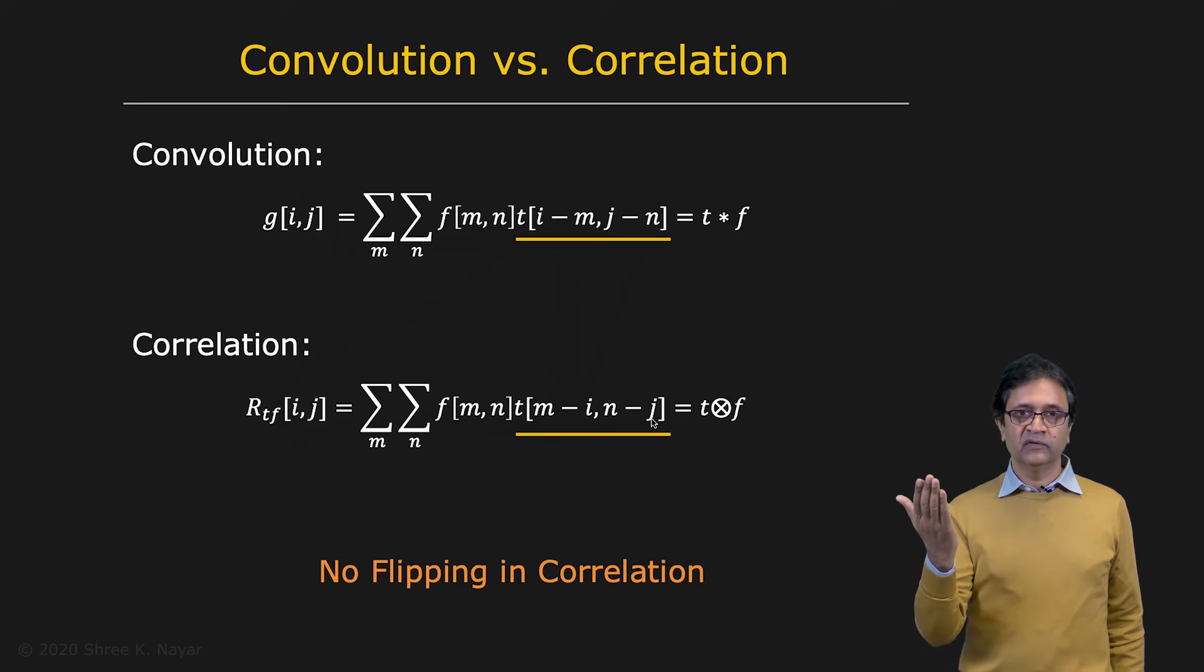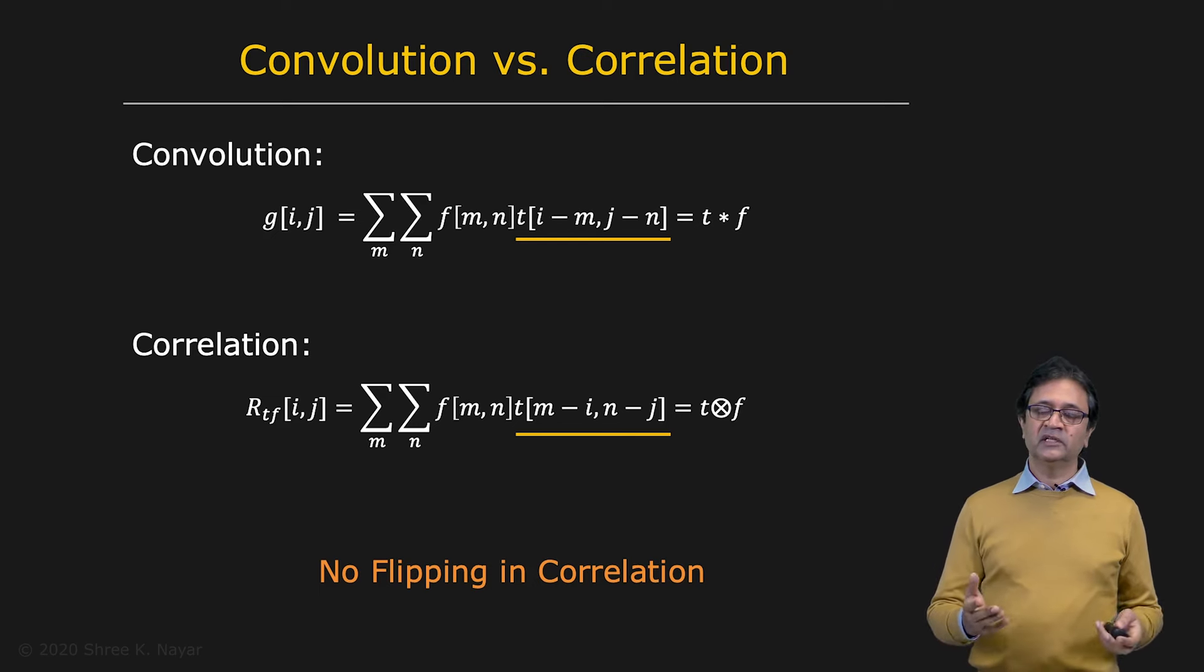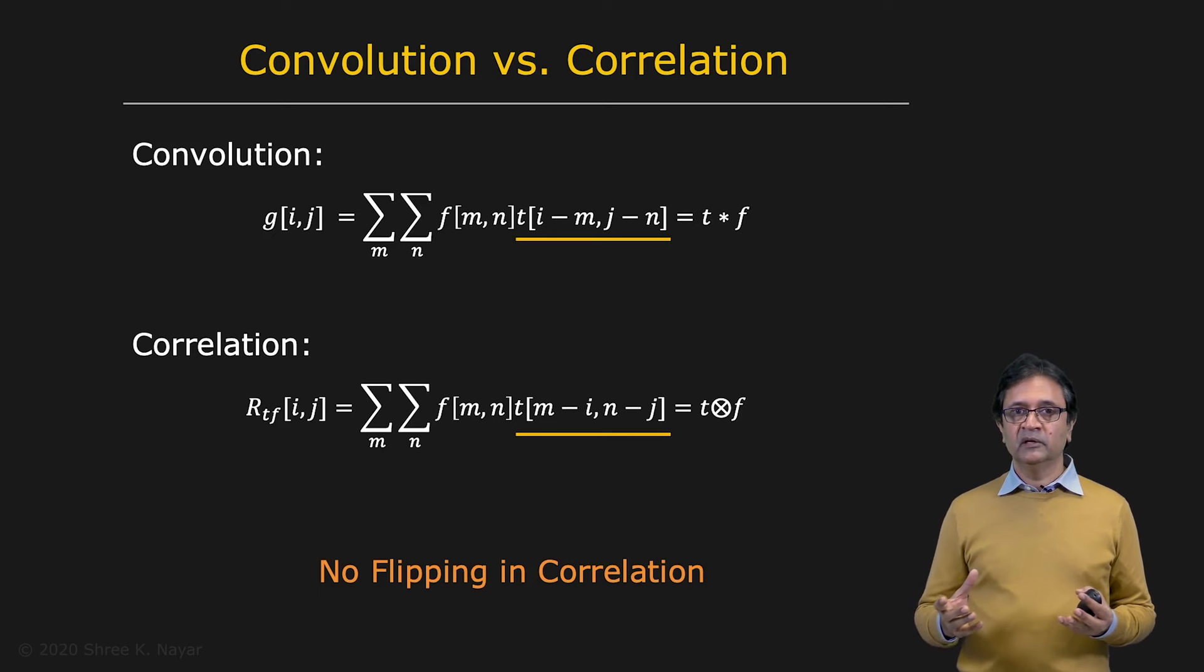You take the template. You don't flip it. You just do a product at each point, and then you sum up the result. So what that says is that correlation is convolution without a flip. Mathematically, that has a lot of implications. However, in terms of implementation, they're very similar.